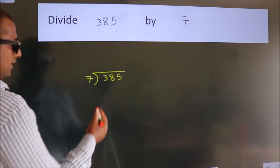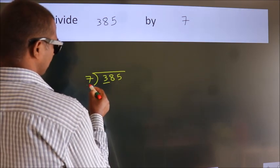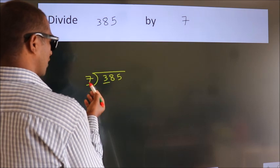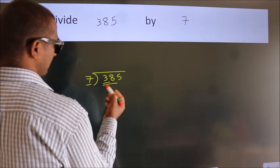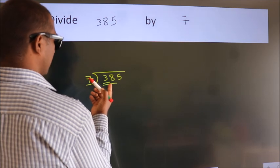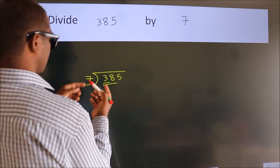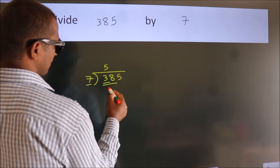Next, here we have 3, here 7. 3 smaller than 7. So, we should take 2 numbers, 38. A number close to 38 in 7 table is 7 fives, 35.